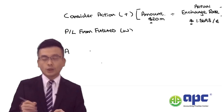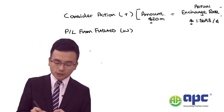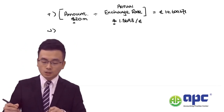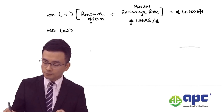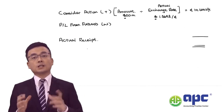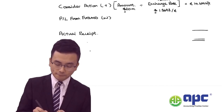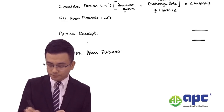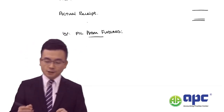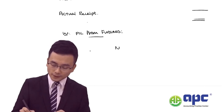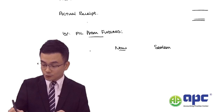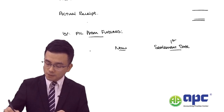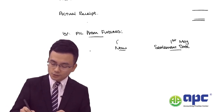To do this, we always need to open a working so we can calculate the actual receipt in combination with the cash market and the futures market. That's the CPA approach. In this working, we calculate the profit or loss from the futures. Similar to what we've seen before, you first need to determine the today date — 1st January — and the settlement date, which is when the transaction actually takes place, on 1st May.